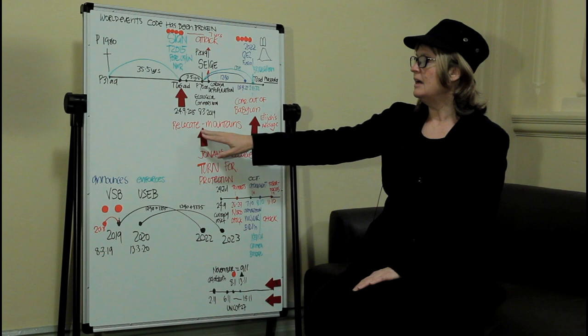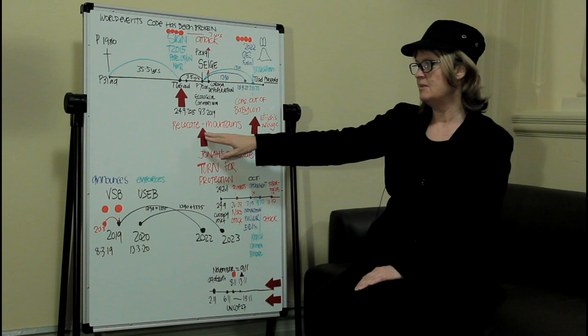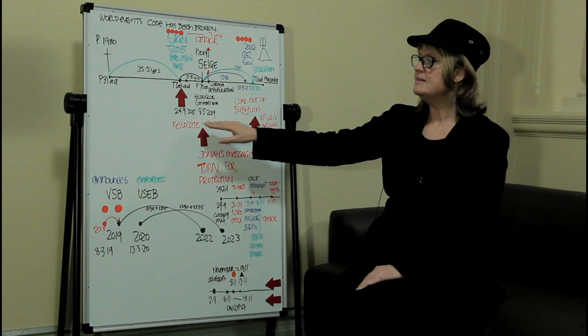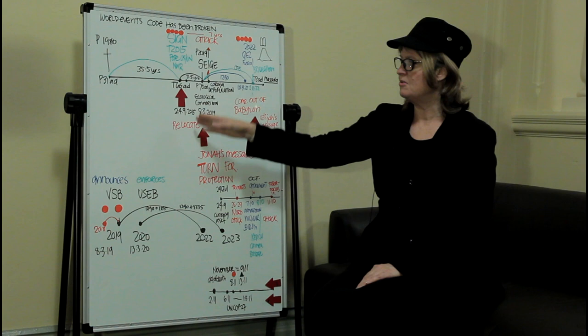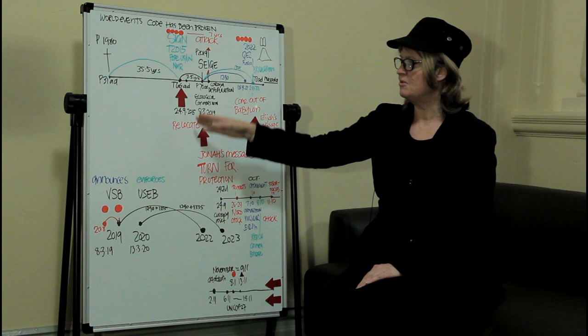So we find in Micah chapter 4 verse 1, and we also find in Isaiah chapter 2 verse 1, that it says in the very last days, God's kingdom is going to be established in the tops of the mountains. So this is how it happens. It happens at this point here. God's kingdom, in other words, his kingdom of safety and love, his law of freedom, that is going to be established in the mountains.